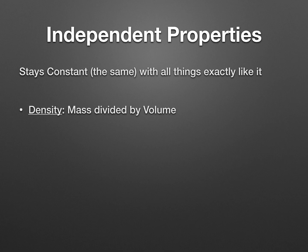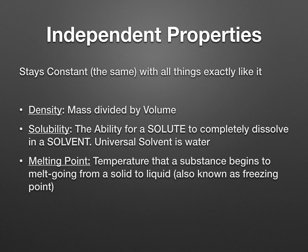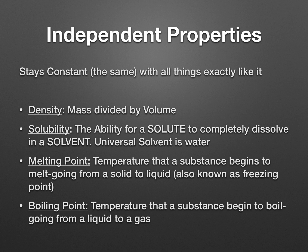The first independent property is density, which you find by taking mass and dividing by volume — we'll talk more about that in class. Solubility is the ability for a solute to completely dissolve into a solvent; the universal solvent most scientists use is water. Melting point is the temperature at which a substance begins to melt, going from solid to liquid — it's also known as the freezing point. Boiling point is the temperature at which a substance begins to boil, going from liquid to gas. For example, water's melting point is 0°C and its boiling point is 100°C, and those are the same for all water around the world.